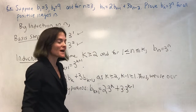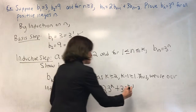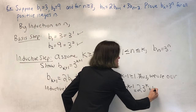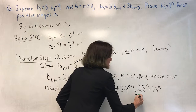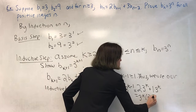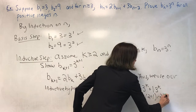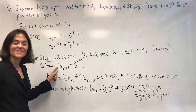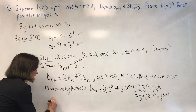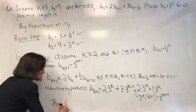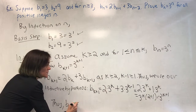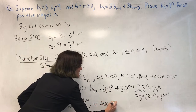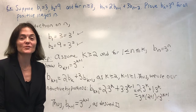Now it's a matter of properties of exponents. This is going to be 2·3^k plus 1·3^k, which altogether gives me 3·3^k, which is 3^(k+1). We wanted to show b(k+1) equals 3^(k+1). Thus b(k+1) equals 3^(k+1), as desired. This is the end of our proof by induction.